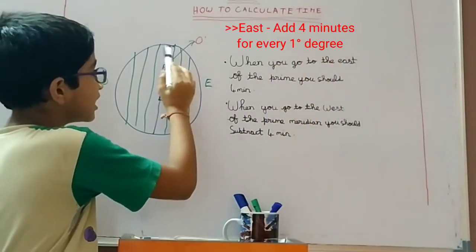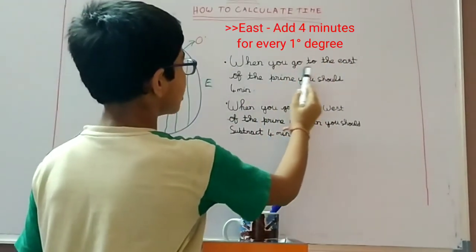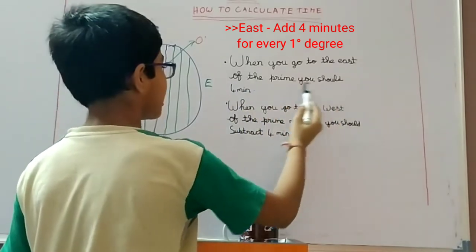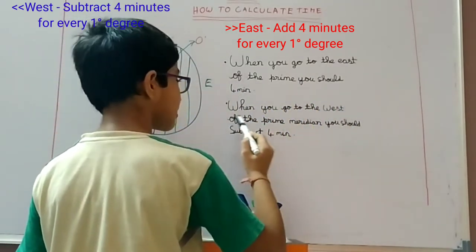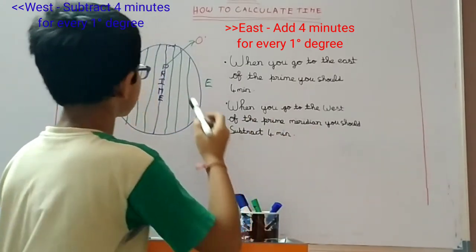In every gap, when you go to the east of the prime meridian, you should add four minutes. And when you go to the west of the prime meridian, you should subtract four minutes.